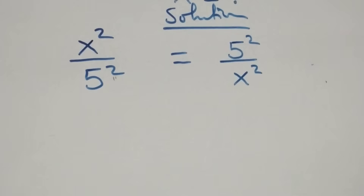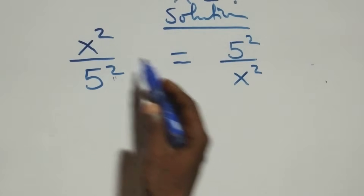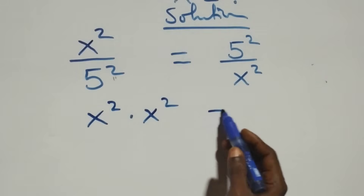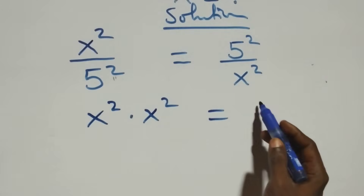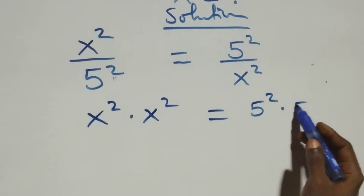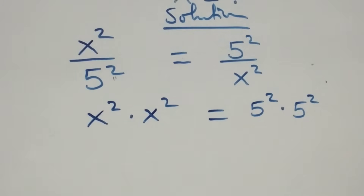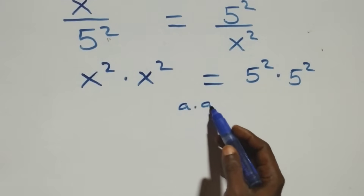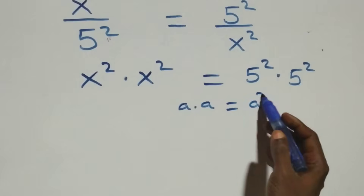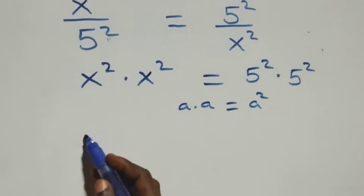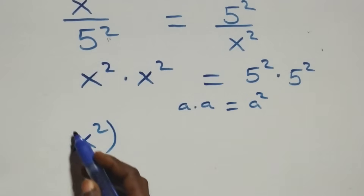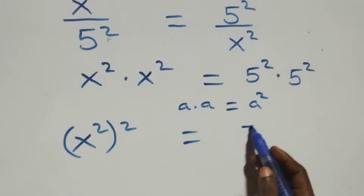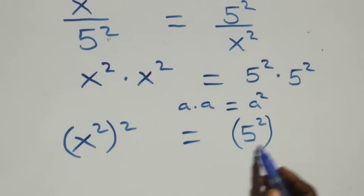The next step here we cross multiply: x squared times x squared, equals also five squared times five squared. Next step here we also have eight times eight which is the same thing as eight squared. Same thing multiplying we can raise as x squared squared, and equals to also five squared squared.